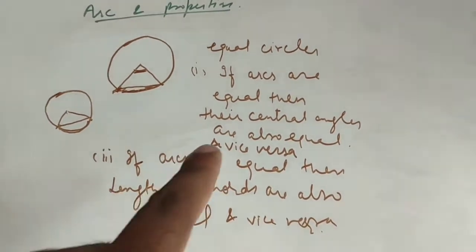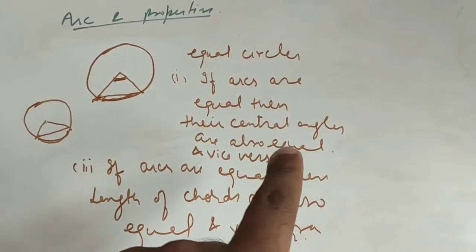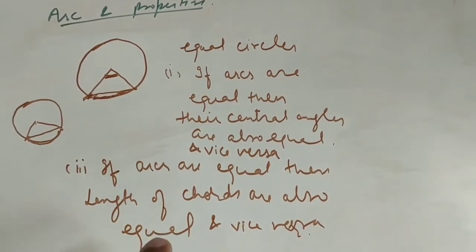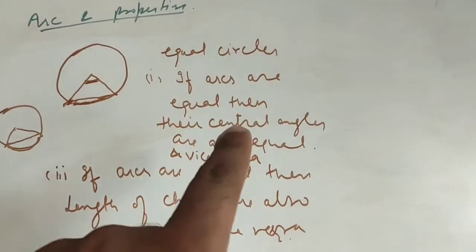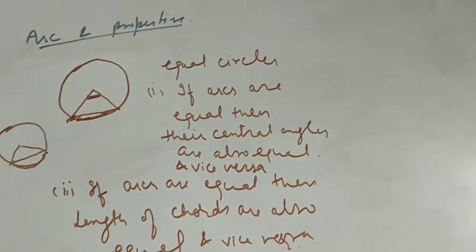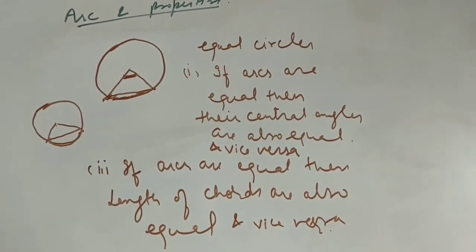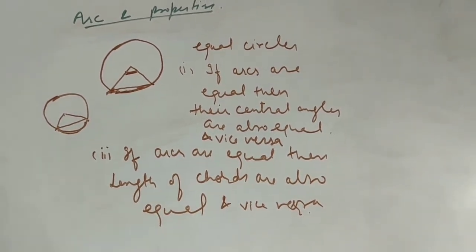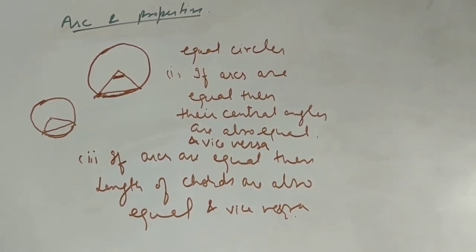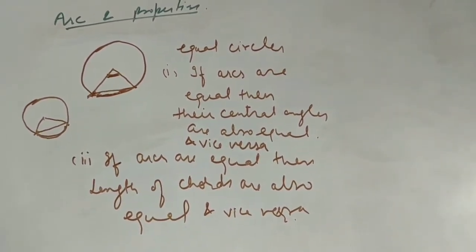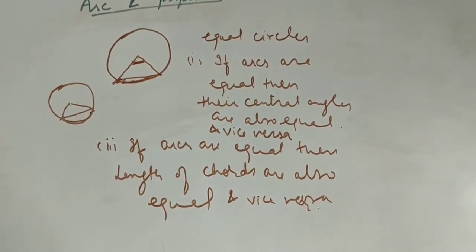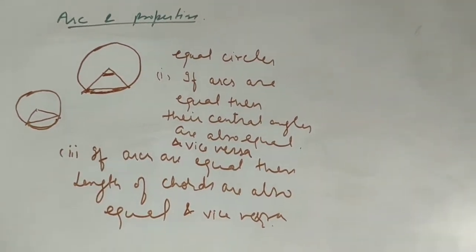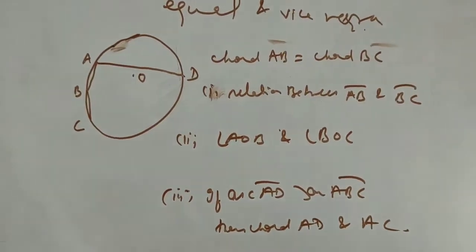In summary: if arcs are equal, then central angles are equal and the length of chords are also equal. If chords are equal, then central angles are equal and the length of arcs are also equal. Now based on these properties we will discuss a few examples.